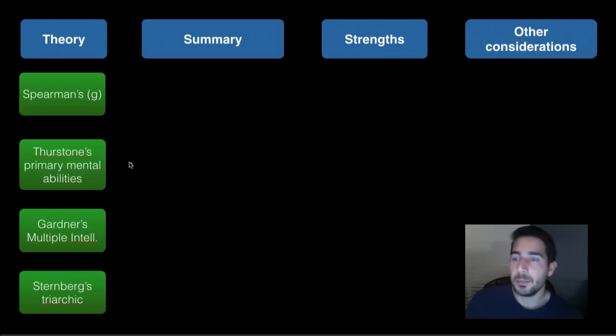Thurston's primary mental abilities. He broke this down into seven factors. He said seven factors and that was word fluency, verbal comprehension, spatial ability, perceptual speed, numerical ability, inductive reasoning, and memory. So all of those seven.